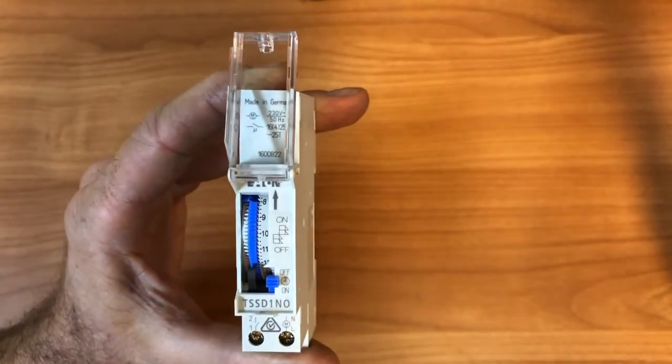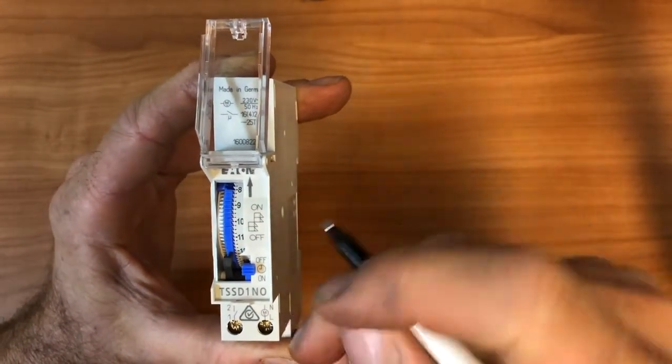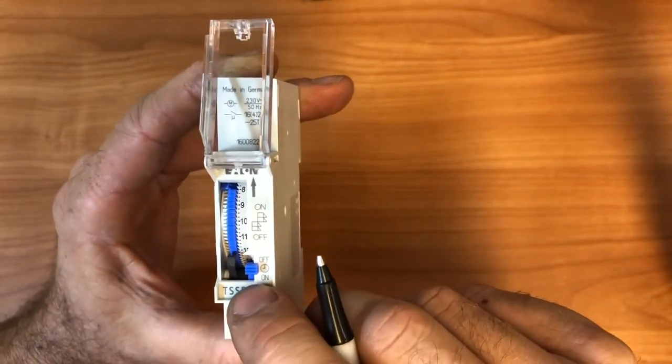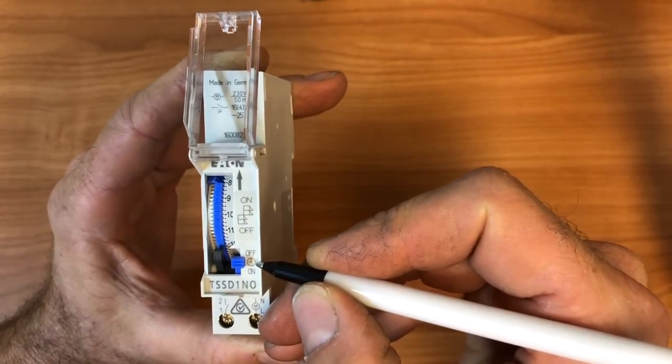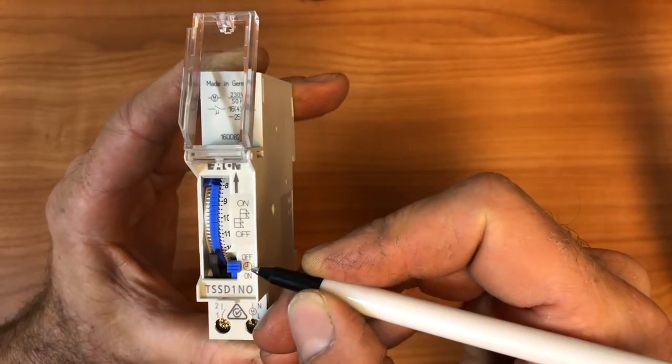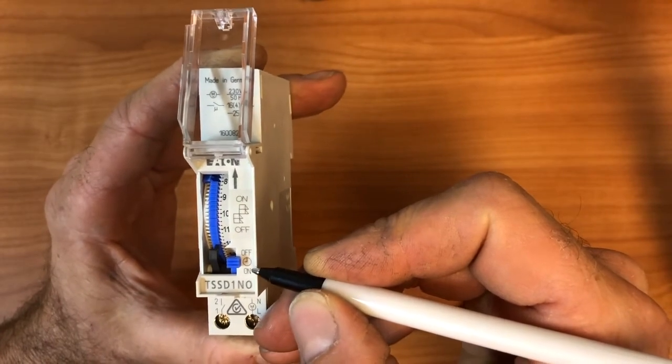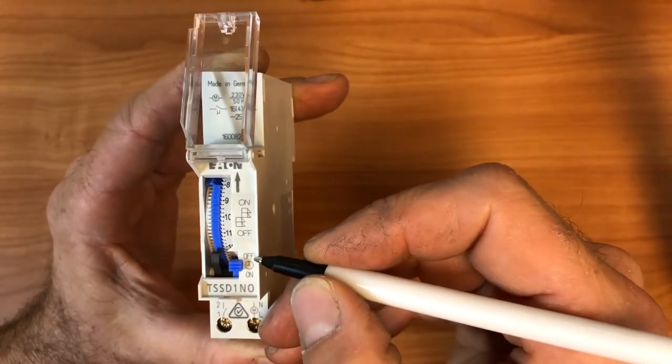Now there's a few things about this timer. First off, we have this little switch, it's a three-position switch down the bottom, and it's got off down the bottom, then above that a picture of a clock, so that when it's in the clock position it means it's controlled by the timer, and then we have an on position.